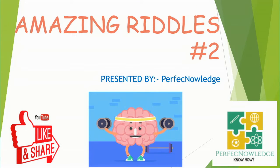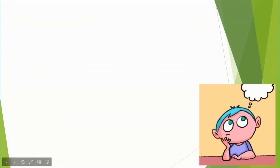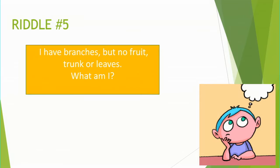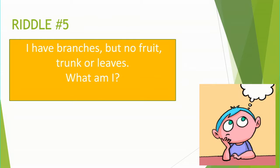Here comes riddle number five: I have branches but no fruit, trunk, or leaves. What am I? Answer: a bank.